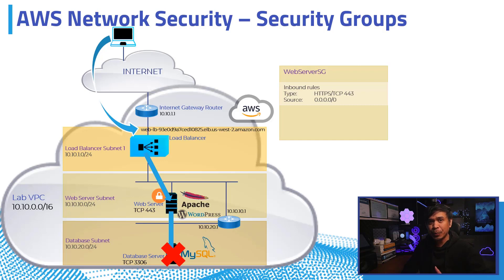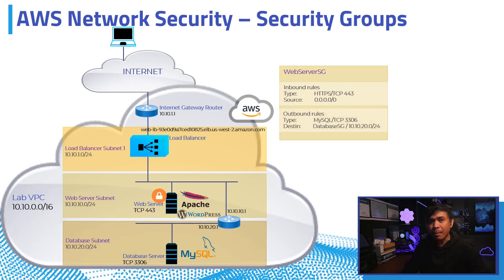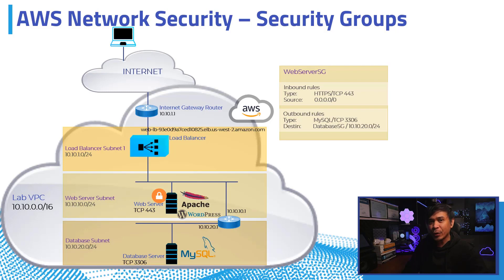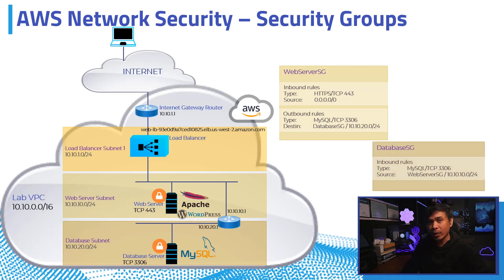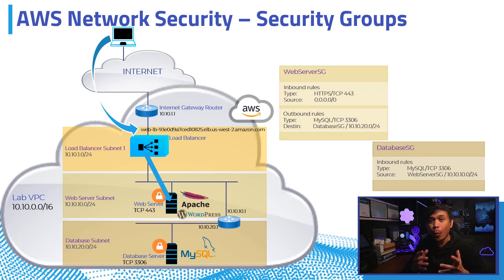Before configuring the database security group, we also needed to add an outbound rule for the web server security group. We allowed MySQL application listening on TCP 3306 and configured the destination as the database security group, or optionally the subnet of the database server, 10.10.20.0/24. Then we configured the database security group inbound rule to allow MySQL on TCP 3306, with the source being the web server security group or optionally the web server subnet 10.10.10.0/24. We tested and were able to access the WordPress application connecting to the MySQL database server successfully.